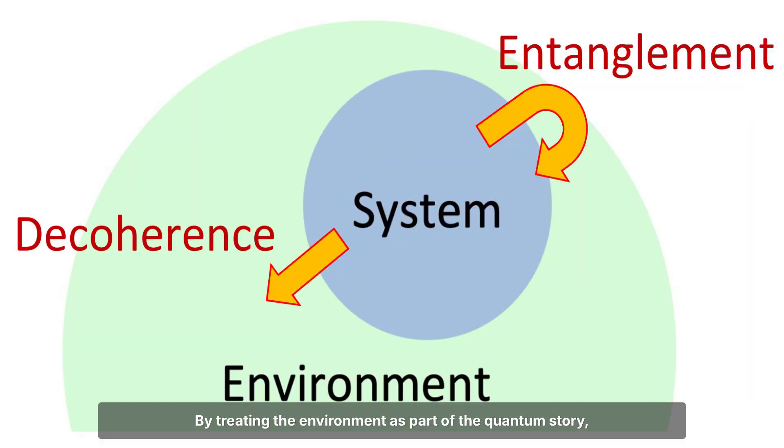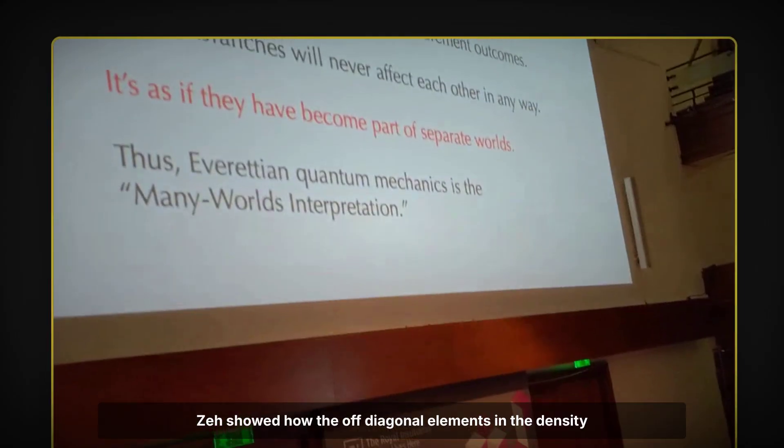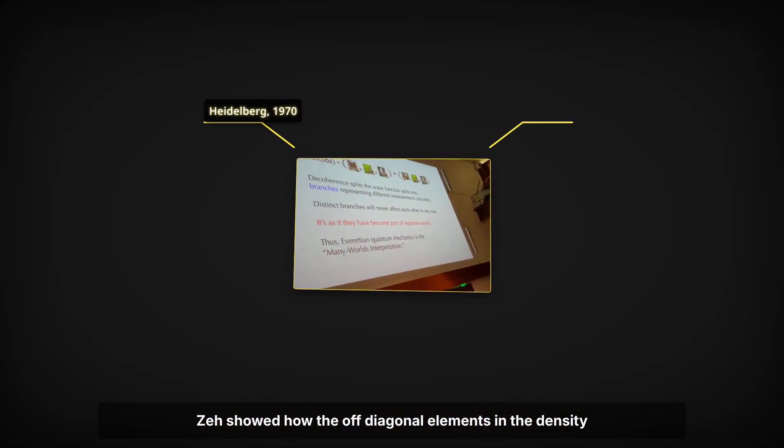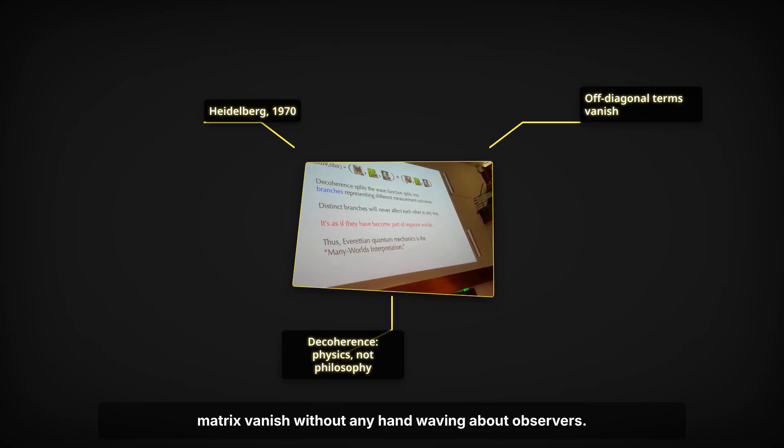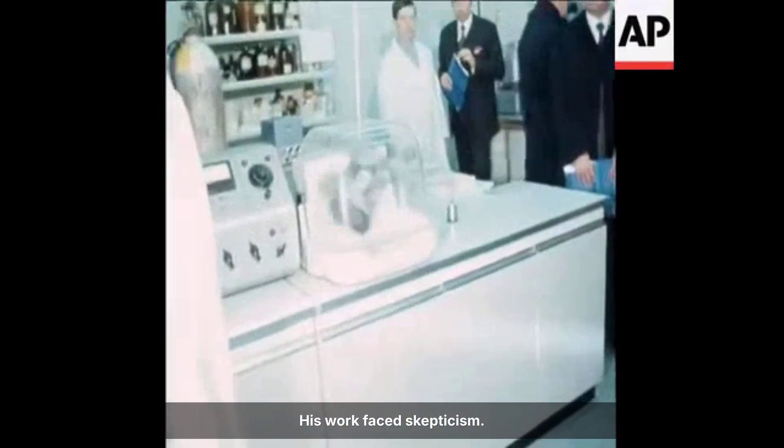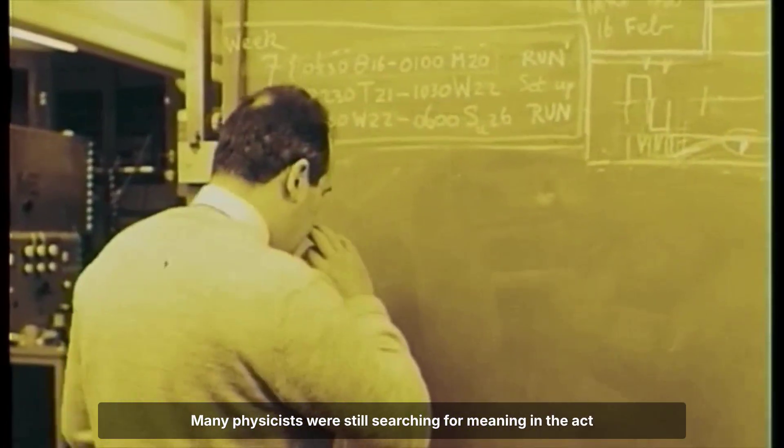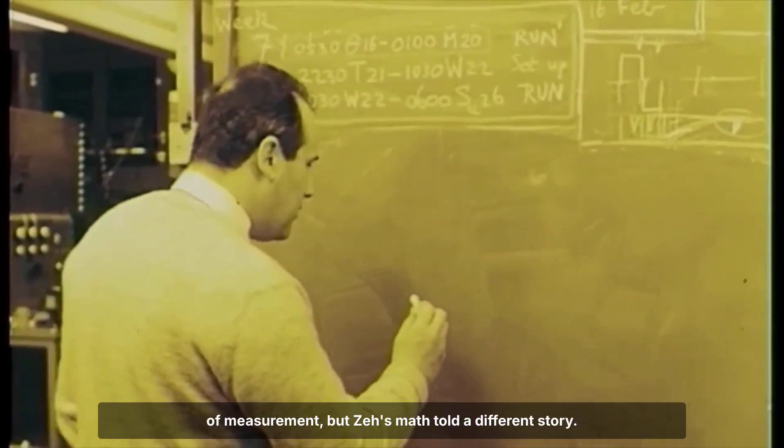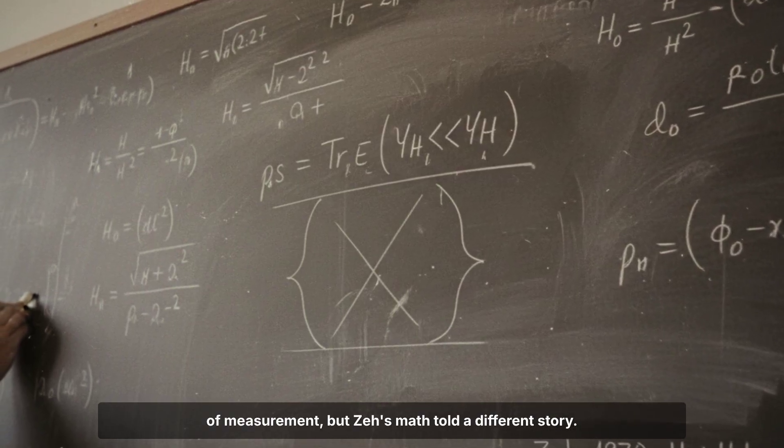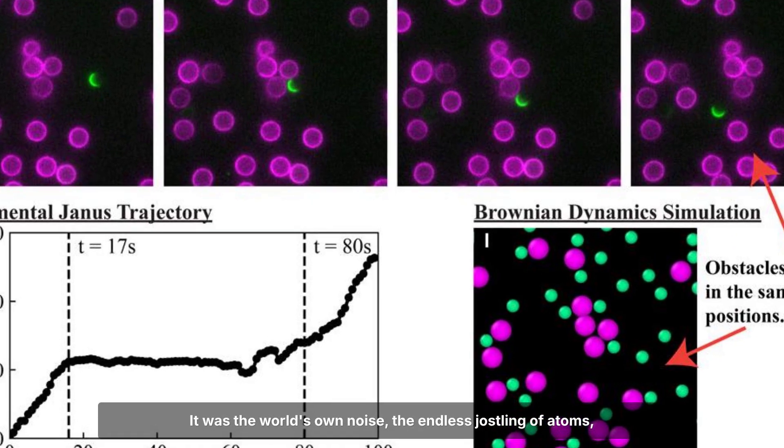By treating the environment as part of the quantum story, Zeh showed how the off-diagonal elements in the density matrix vanish, without any hand-waving about observers. His work faced skepticism. Many physicists were still searching for meaning in the act of measurement, but Zeh's math told a different story.